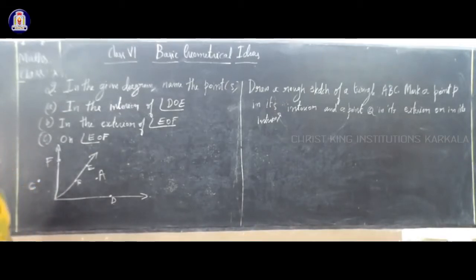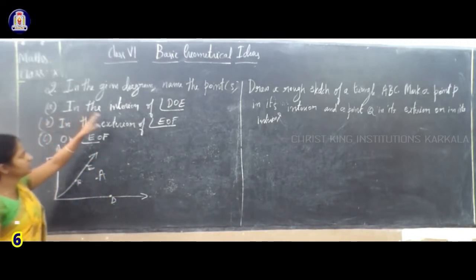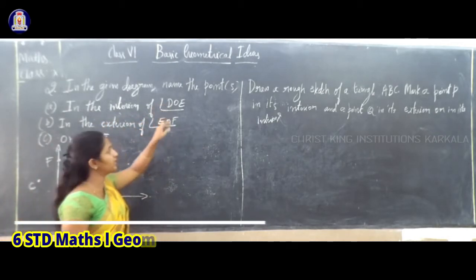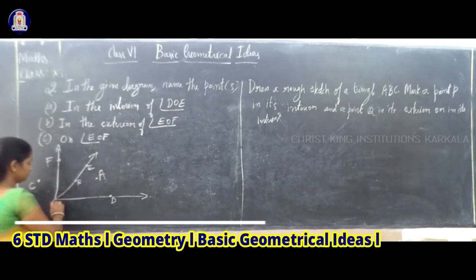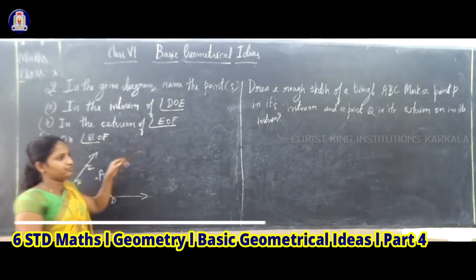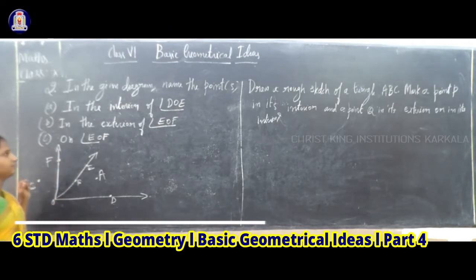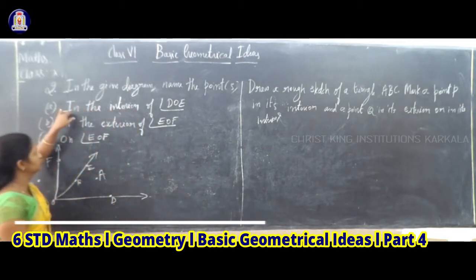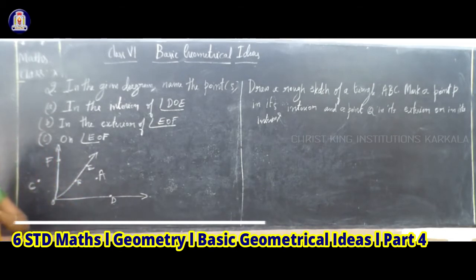The next question in raising geometrical ideas — see the second question. In the given diagram, name the points in the interior of angle DOE, and in the exterior of angle EOF, and the third one on the angle EOF. So what you have to do: in the given diagram, name the points. Interior means inside, exterior means outside.